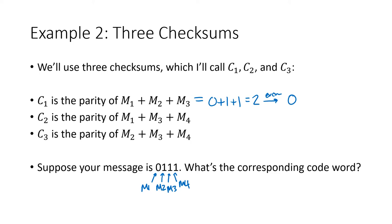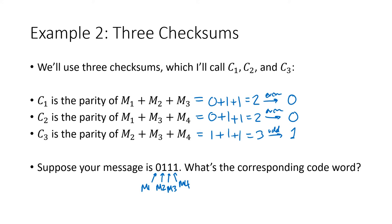For c2, the parity of m1 + m3 + m4 is 0 + 1 + 1 = 2, which is also even, so my second check digit is also 0. For c3, the parity of m2 + m3 + m4 is 1 + 1 + 1 = 3. Since 3 is odd, my third check digit is 1. So my message was 0, 1, 1, 1, and the code word is that message with the check digits appended: 0, 1, 1, 1, 0, 0, 1. This is what goes into our dictionary.